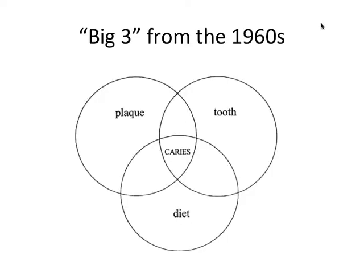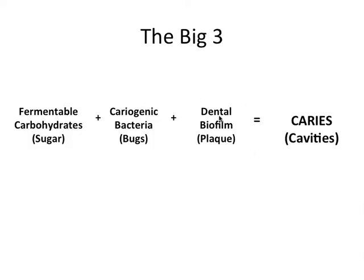So the original caries theory from the 1960s had three prerequisites for caries: the tooth, the diet, and the plaque. Obviously the tooth is necessary, so I kind of modified this and broke it down into three categories, because I think this big three is a little more useful to think about. The caries process is multifactorial and requires these factors in order to occur.